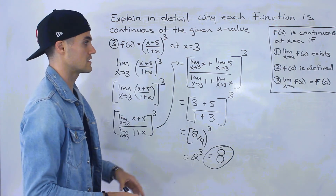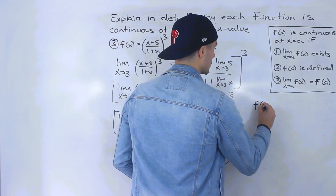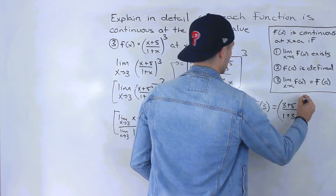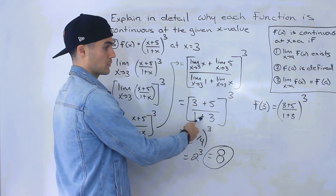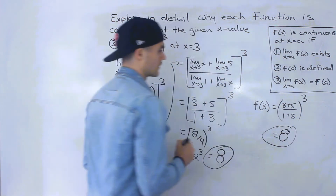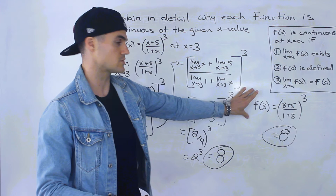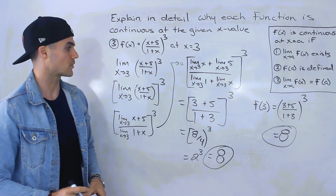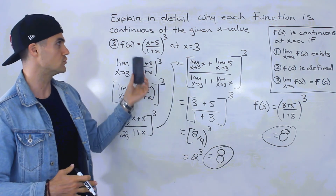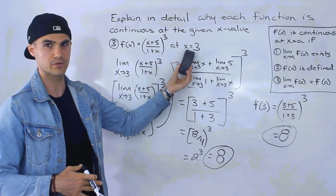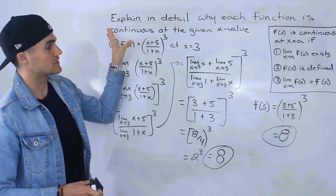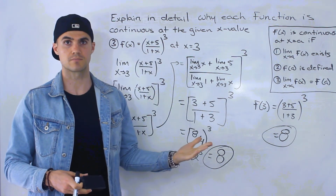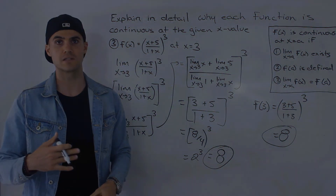The limit exists and equals 8. Then f(3) is found by plugging in 3: ((3+5)/(1+3))³ = 8 as well. Because the limit equals f(3), the third condition holds, meaning the function is continuous at x = 3. As I mentioned, it may seem unnecessary when you know the function is continuous by direct substitution, but if they want you to explain in detail using the definition of continuity and properties of limits, that's how you do it — and it's good practice for limit property questions.